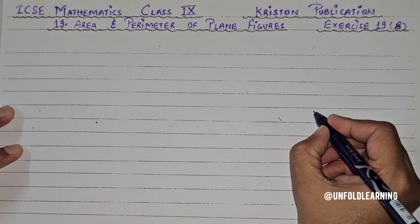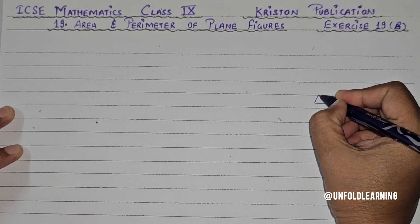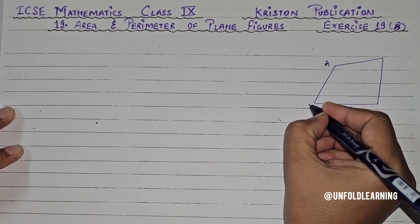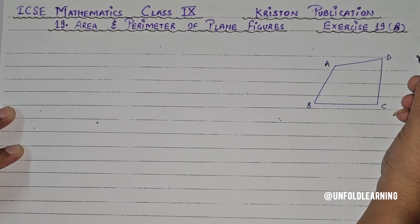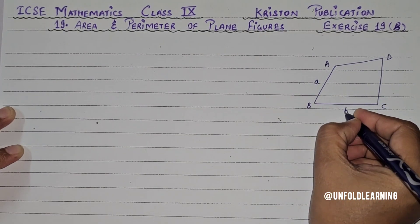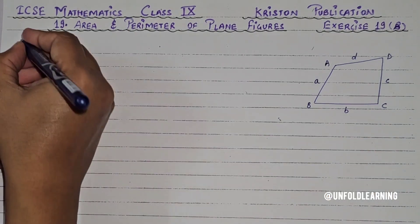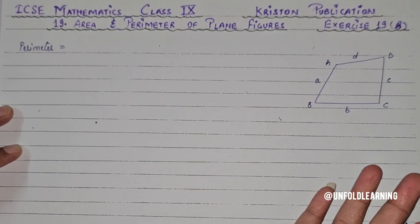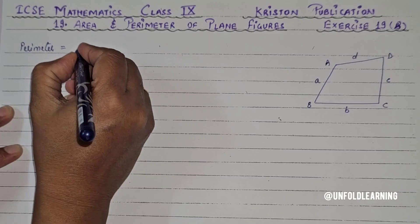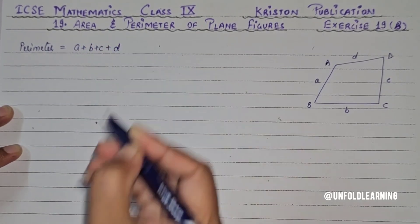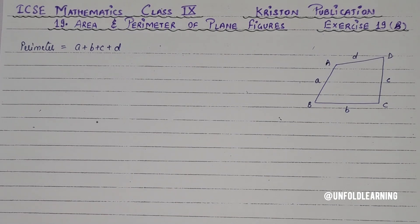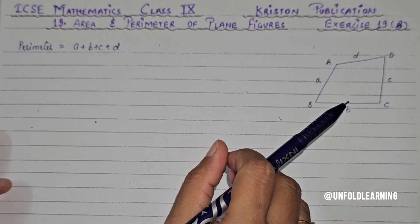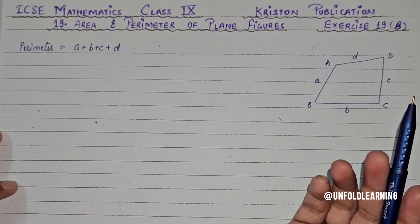Imagine a quadrilateral with random side lengths — not equal to any other side. The perimeter of any quadrilateral is the sum of all its boundaries. Perimeter is the total length of the boundary, and the surface enclosed is called area. So we sum all the boundary lengths to get the perimeter.